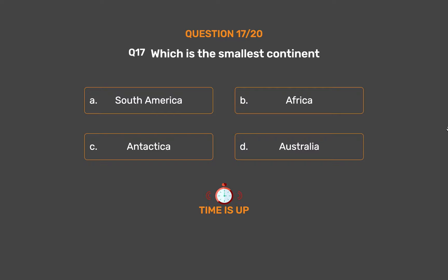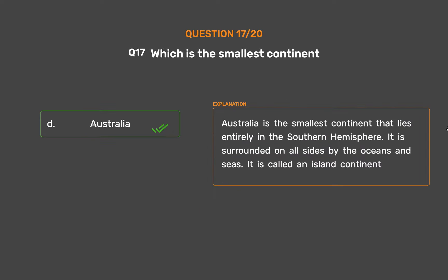The correct answer is Option D: Australia. It is surrounded on all sides by the oceans and seas. It is called an island continent.